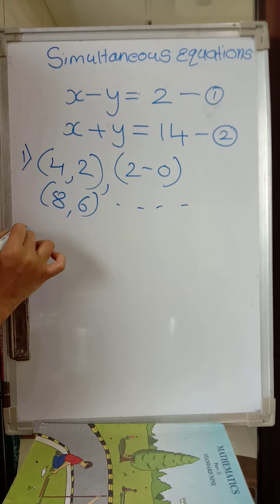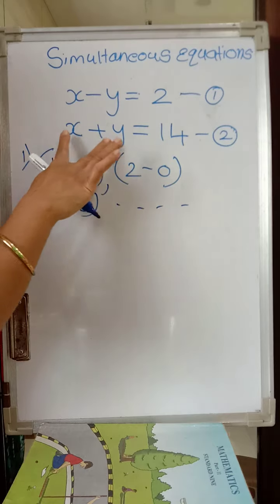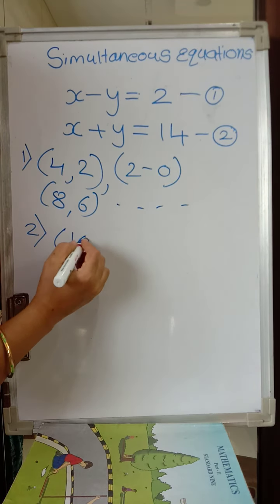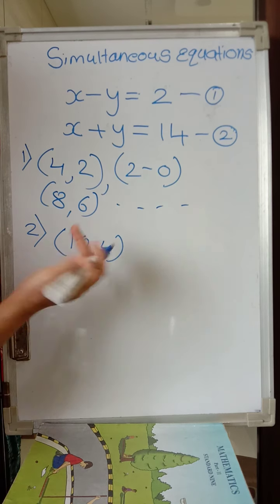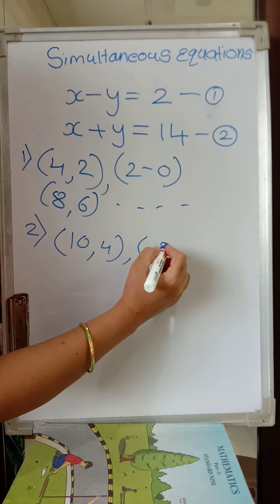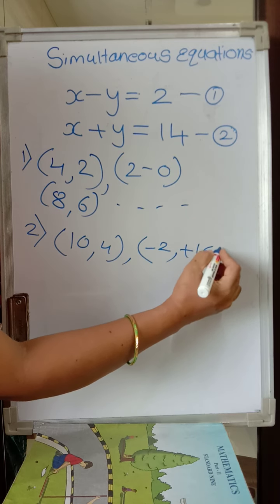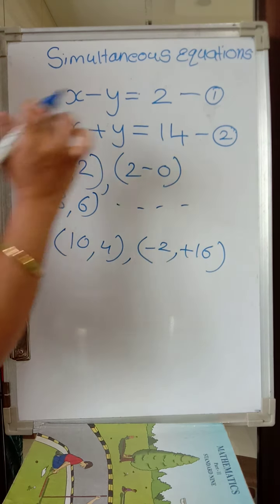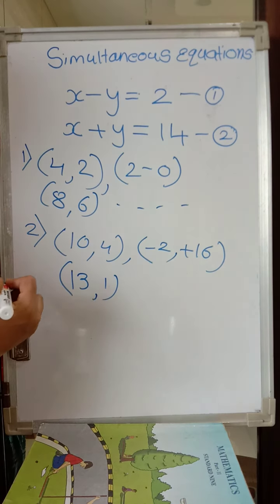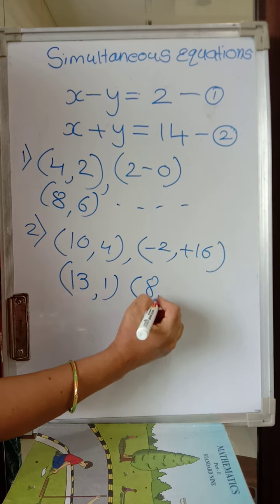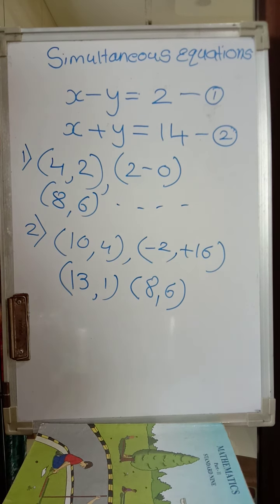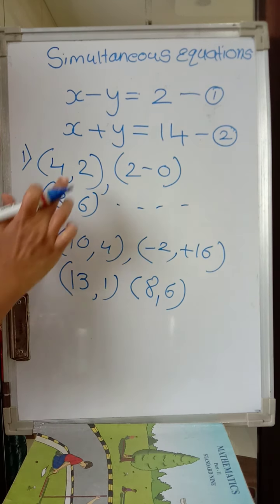Now let's think about equation 2. Tell me two variables whose addition should be 14. You can say 10 and 4 — this gives 14. For example, minus 2 is x and plus 16 is y — this also gives 14. Then you have 13 comma 1, which also gives 14. And 8 comma 6 also gives the same answer — 8 plus 6 is 14.